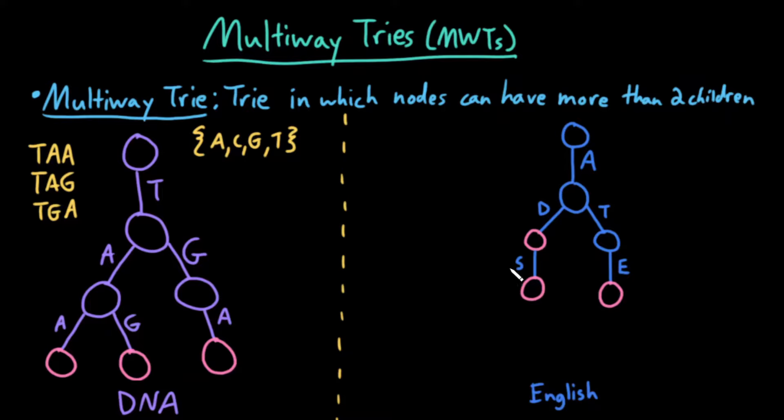What about the more general alphabet? So what about a multi-way trie over the English language alphabet? In other words, my alphabet is A, B, C, D, and so on, all the letters of the English alphabet.